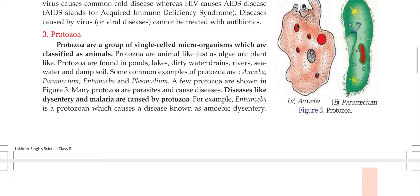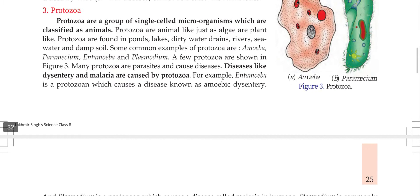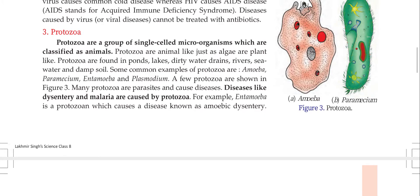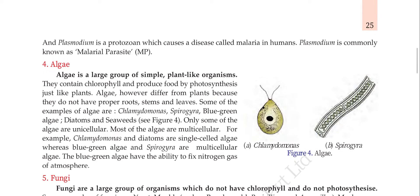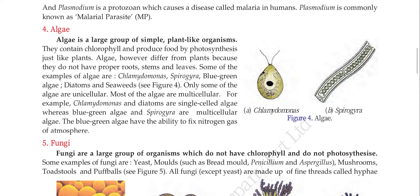Entamoeba histolytica is a protozoa which causes a disease known as amoebic dysentery. अगर हम unhygienic water पीते हैं, तो उस dirty water में amoeba की वजह से body के stomach में infection होना start हो जाता है।